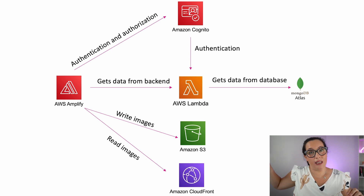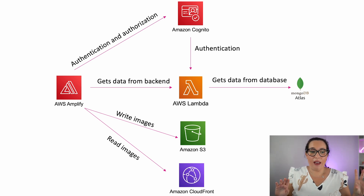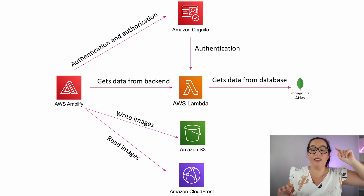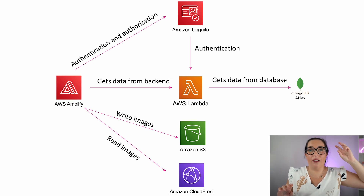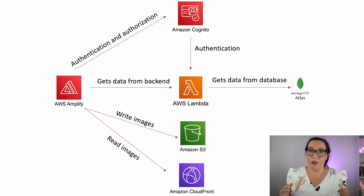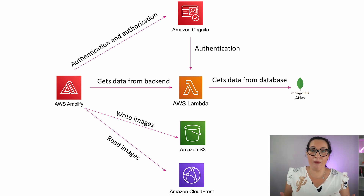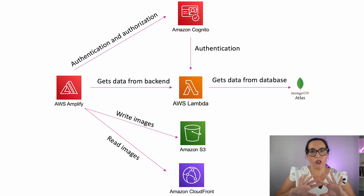We have our database hosted in MongoDB Atlas, a different partner somewhere else on the internet. Our Amplify is using Cognito to authenticate, so we have login, register, forgot password, and permissions for what users can do. Lambda is also using Cognito for some authentication. The images that this web page has are hosted in S3 and can be retrieved with a CloudFront distribution. That's the architecture.